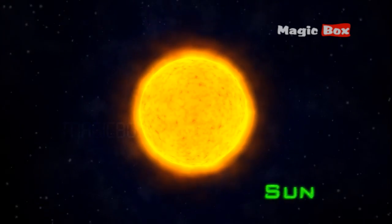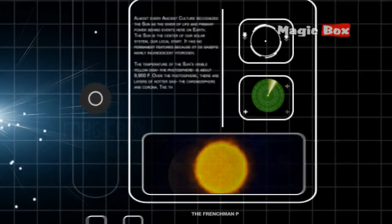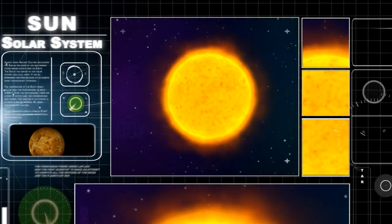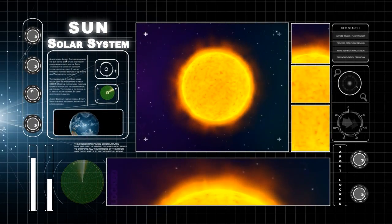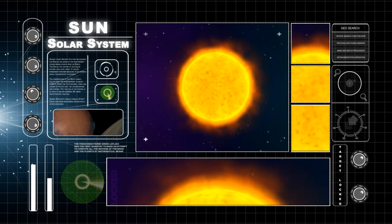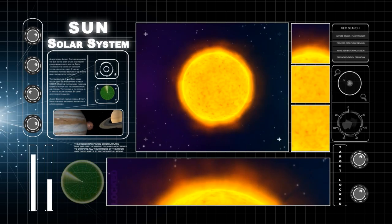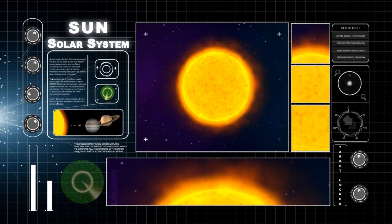The Sun is a member of the Milky Way galaxy. It is believed to be over 4 billion years old.